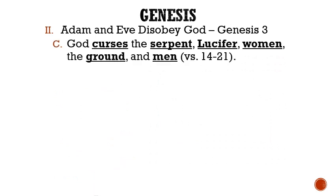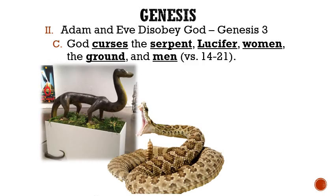So letter C: God curses the serpent, Lucifer, women, the ground, and men. The serpent was cursed to be a ground crawler and to eat dust. Apparently snakes used to be upright in some way, and ironically a snake sticks its tongue out to taste the air in order to find its prey. Interestingly, evolutionary scientists do believe that snakes used to have legs but just lost them. The Bible gives another explanation of this thousands of years before scientists would have even discovered it.